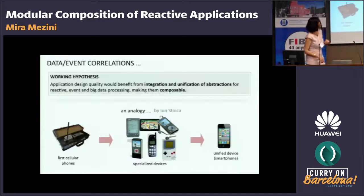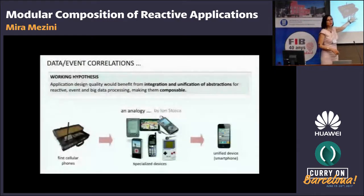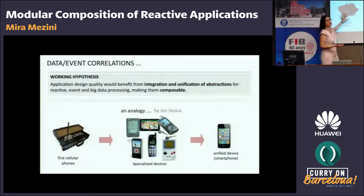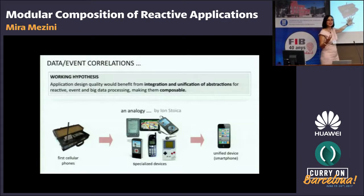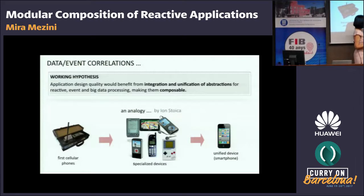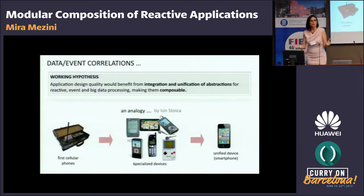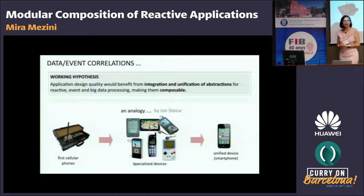To explain what I mean, I will use an analogy borrowed from Jan Stoica. It basically says we started with mobile phones — it's big language, basically. But people realized this mobile communication technology was interesting for a lot of things. What we saw next were a lot of specialized devices that did one thing with the technology, which eventually ended up with our smartphones, which provide a unified platform on top of which we can plug all these different specialized functionalities.